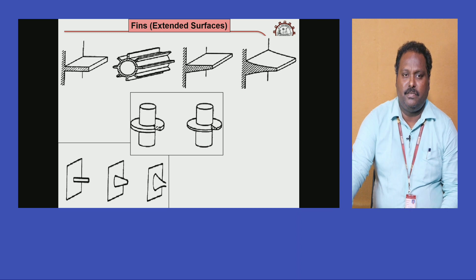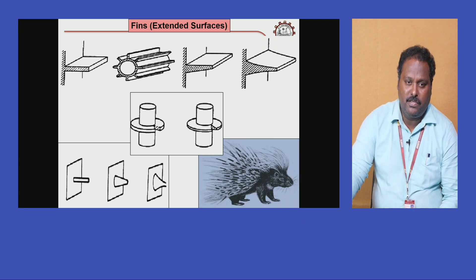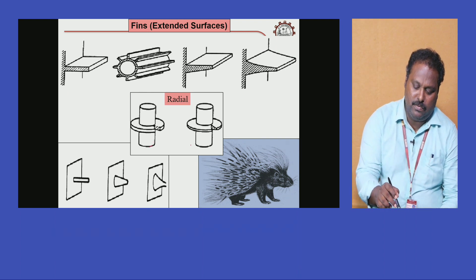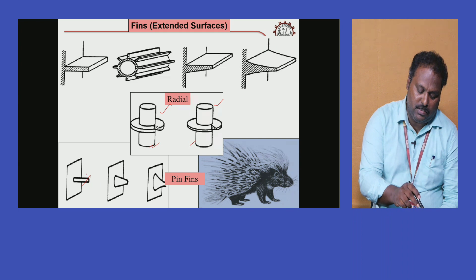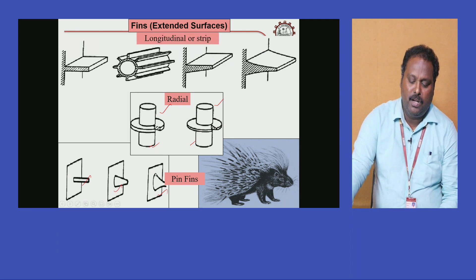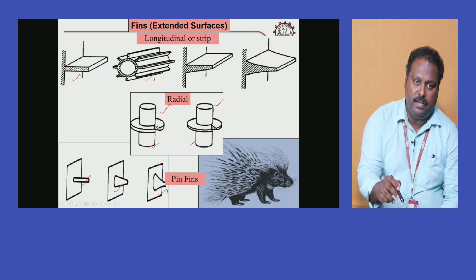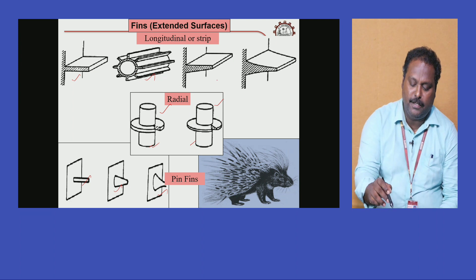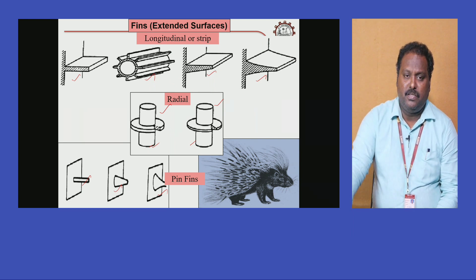There are many types of fins available. These include radial fins or circular fins, also called annular fins. There are also pin fins of different varieties: uniform cross-section, variable cross-section along the length, and hyperbolic variation. Additionally, there are longitudinal spines or stripes — rectangular longitudinal spines around a cylinder, triangular spines, and hyperbolic spines — all serving to transfer heat in different configurations.